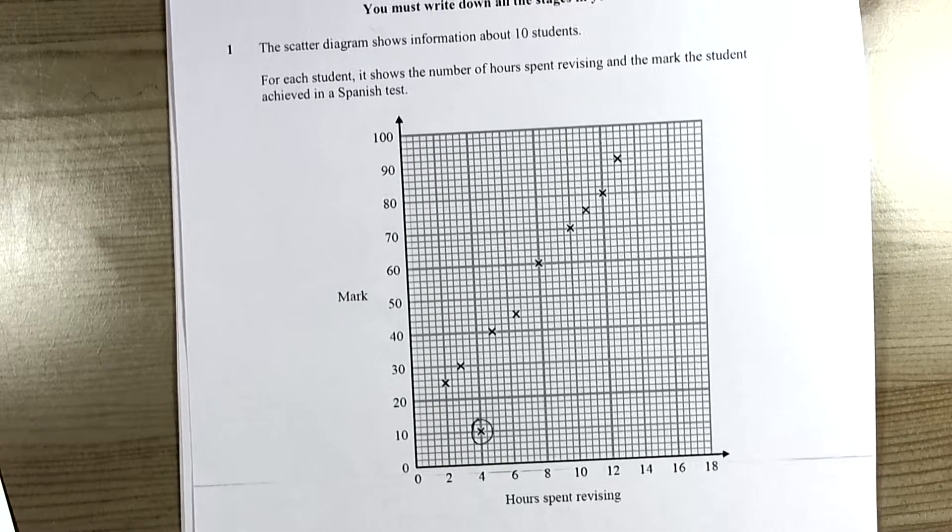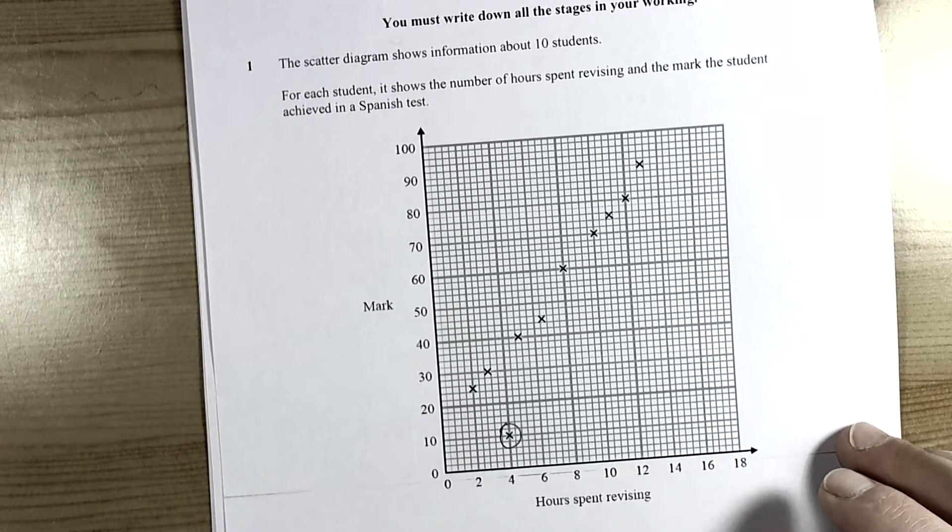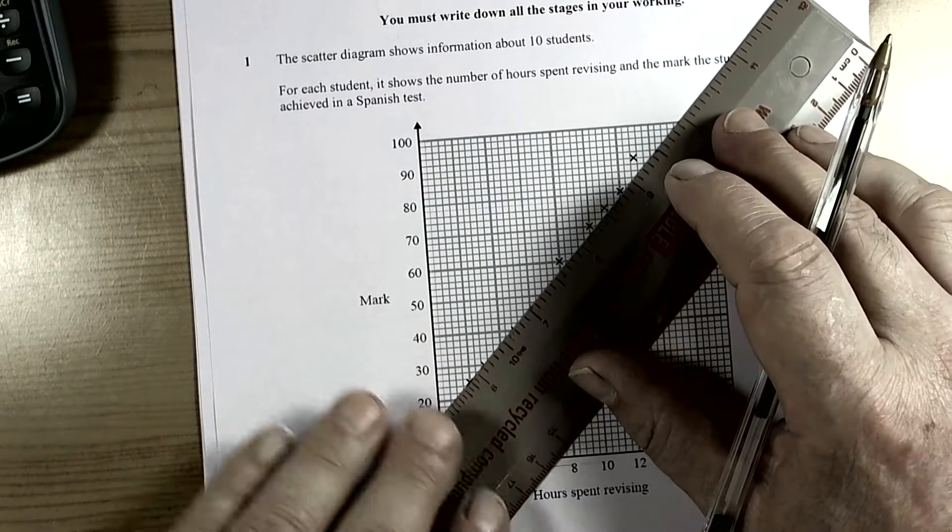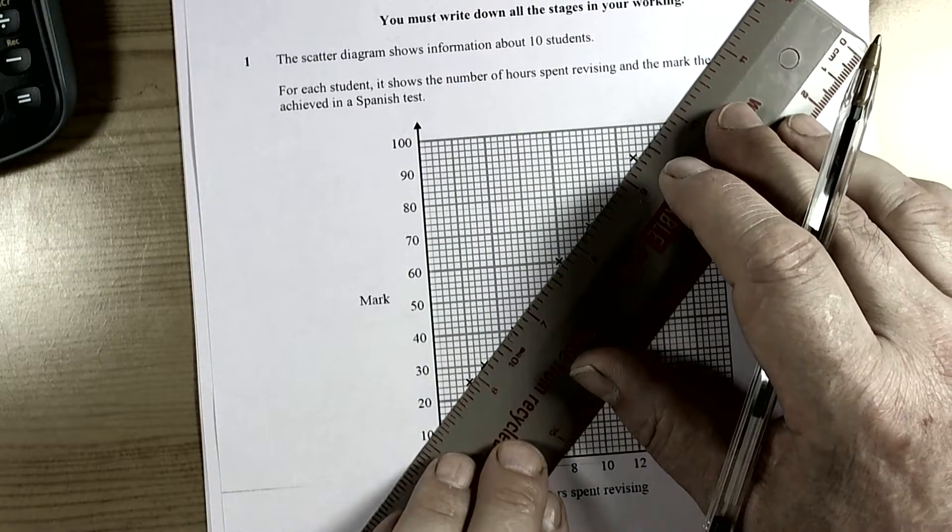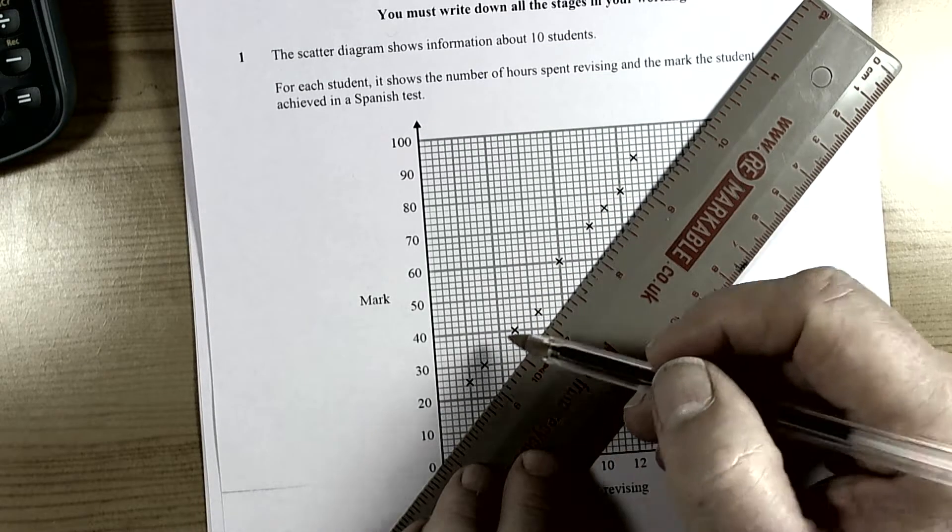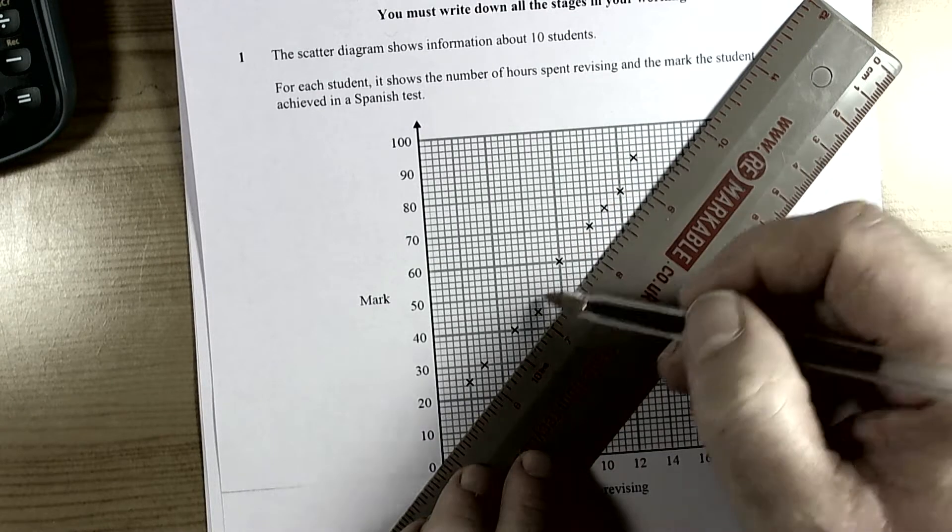Normally with scatter graphs the first thing I would recommend is that you draw the line of best fit irrespective of whether the question actually wants it, because it helps you to think about what's going on. And if you remember, the line of best fit is drawn such that it's a line that follows the pattern of the crosses